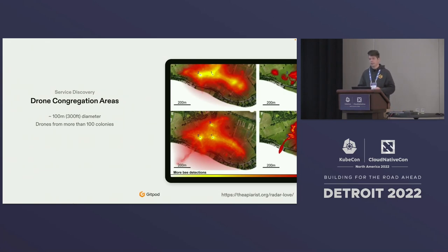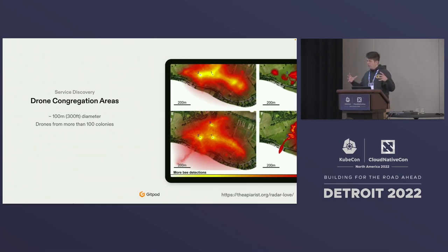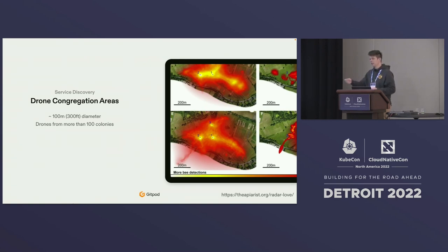Drones have a service discovery aspect. Drones and virgin queens meet to introduce genetic variance and need to discover where they would meet. This happens through drone congregation areas — specific areas about a hundred meters in diameter that can contain drones from more than a hundred different colonies. We humans have absolutely no idea how they identify those areas. The best theory is that they detect landscape features to find them.